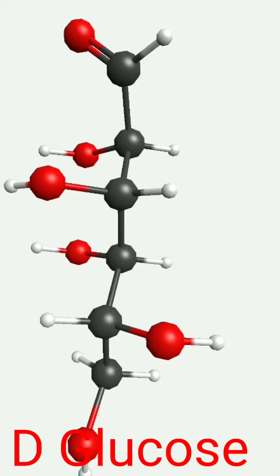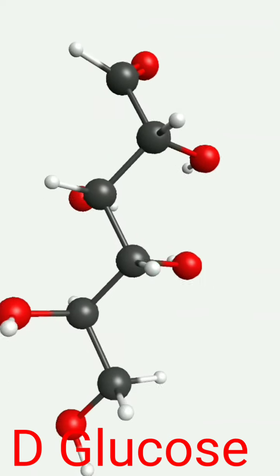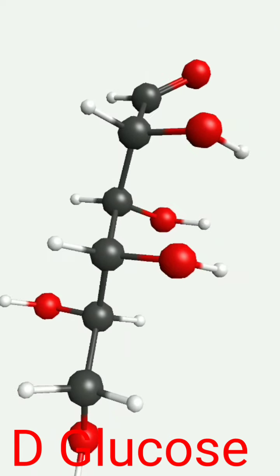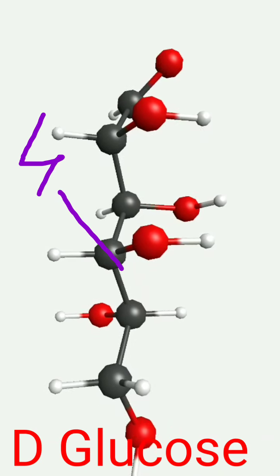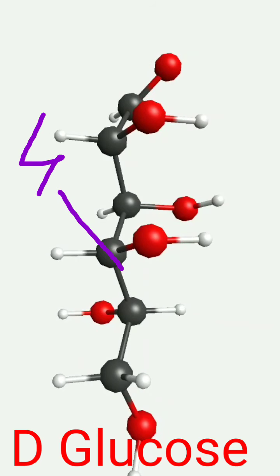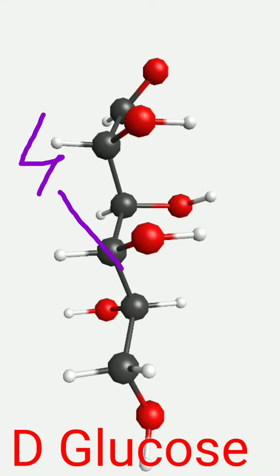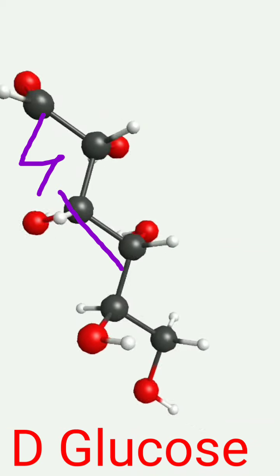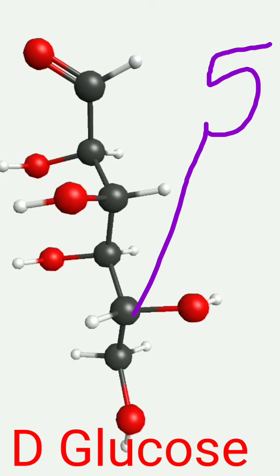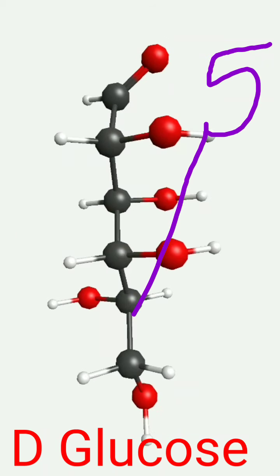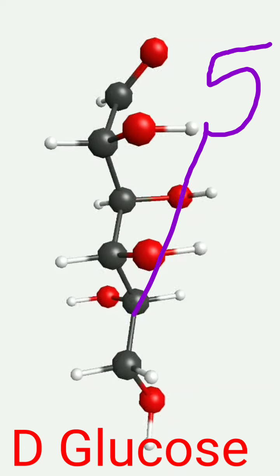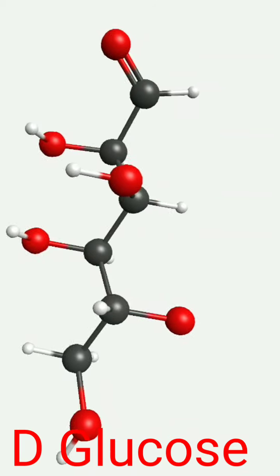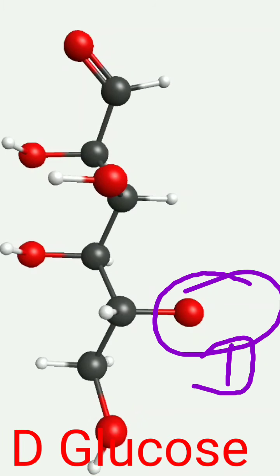Similarly, to see the configuration of carbon number four, you have to rotate the molecule. Then you will see both valencies of hydrogen and hydroxide towards you. You can see that hydroxide is on the right side and hydrogen is on the left side. Now in carbon number five, hydroxide is on the right side — that's why it is called D-glucose. D-glucose means the position of hydroxide at carbon number five is on the right side. If it is on the left side, it will be called L-glucose.